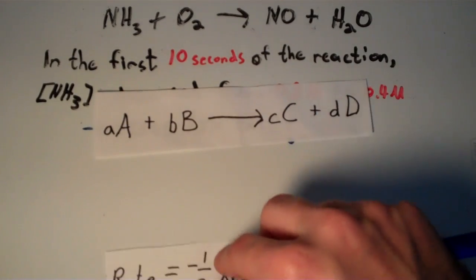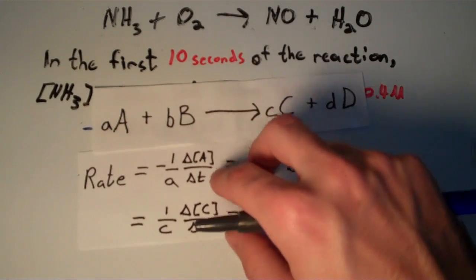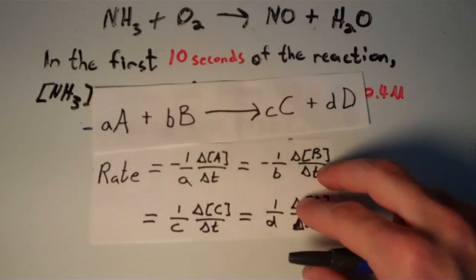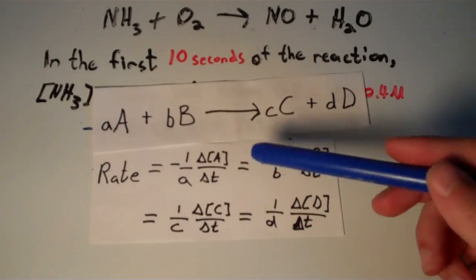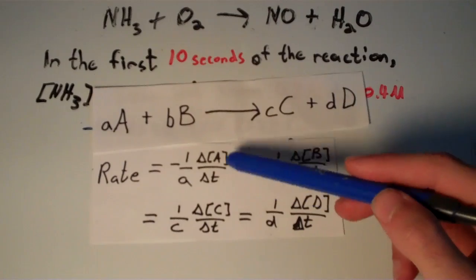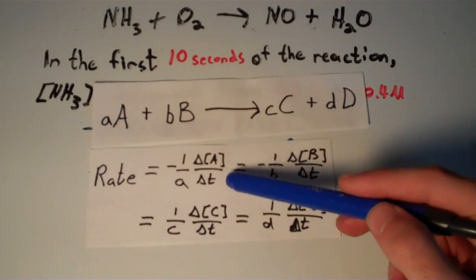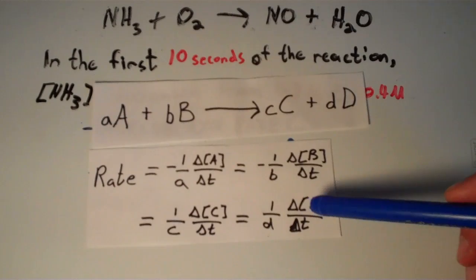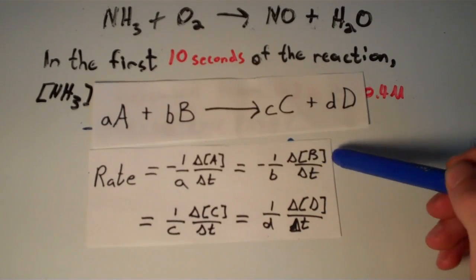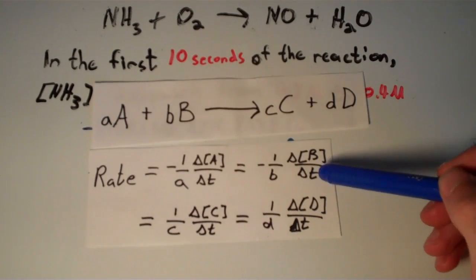So it says that rate is equal to negative 1 over little a times the change of concentration of A over the change in time, which is equal to the negative of 1 over little b times the change in concentration of B over the change in time.